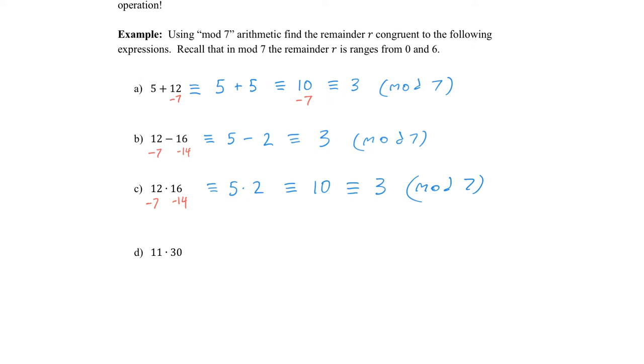Another example below, we have 11 times 30. Let's try to think of multiples of 7 that are close to these numbers. So 11, we could subtract 7. And multiple of 7 that's close to 30, we could do 14, 21, how about 28. So we'll subtract 28. As a result here, we get 4 times 2, which is 8. From the 8, I'll take away 7, and I get 1 in mod 7 as my final result.